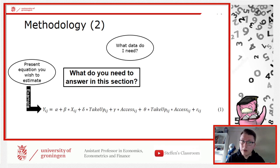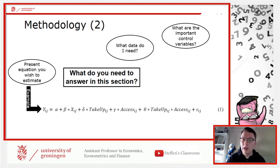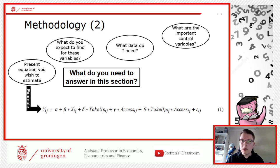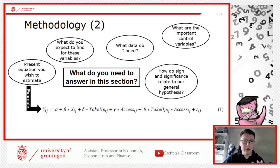You can see here, I did not, on purpose, write up every single variable, because you would distinguish between what is important and what is less important. State what are the important control variables that you consider in your model. And furthermore, what do you expect to find for these variables? What do you expect from the interaction term here?